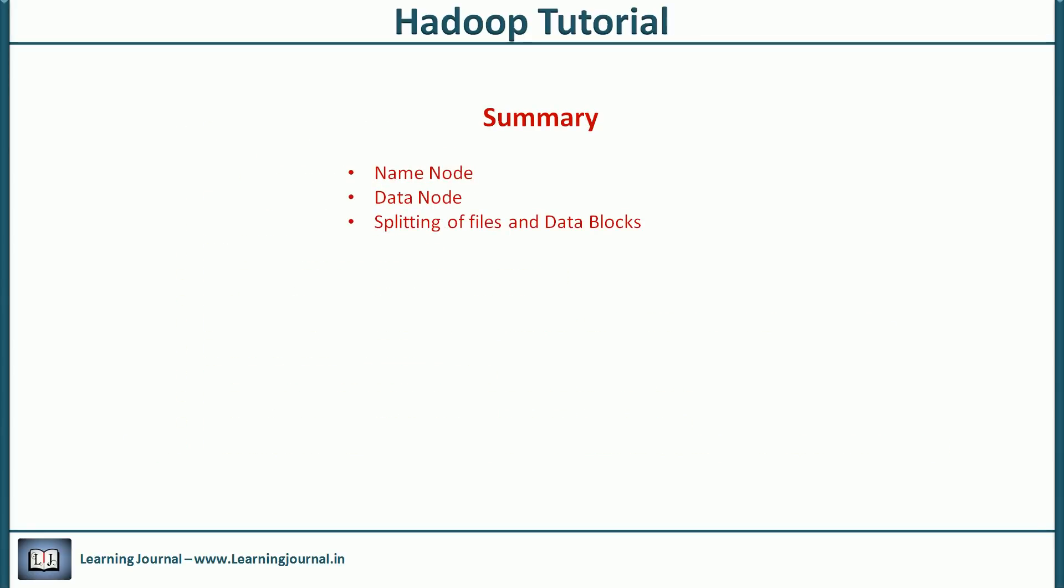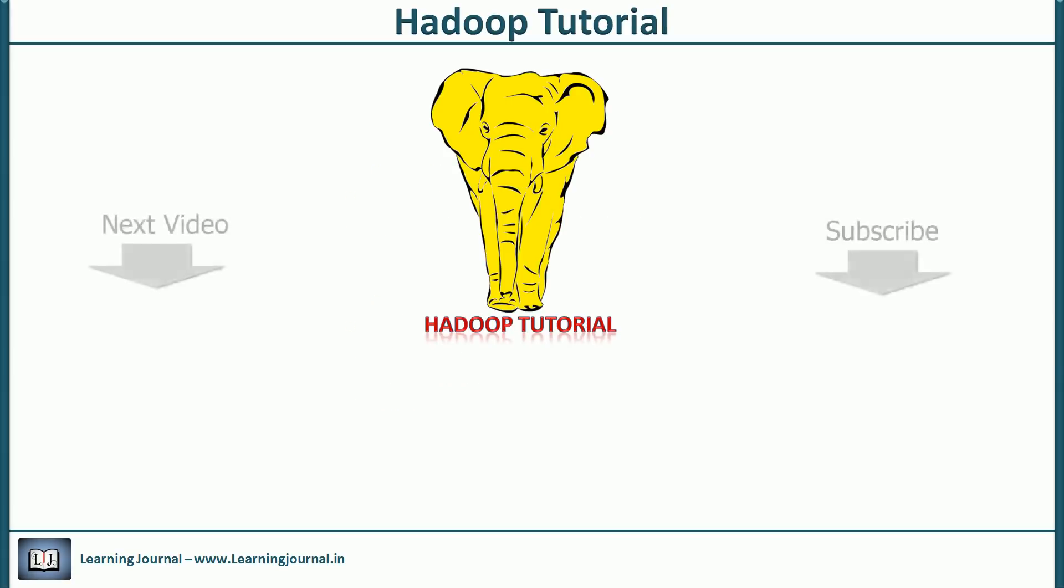So far we talked about following core architecture elements of HDFS. We also talked about heartbeat, block report, block sizes, client-side buffering and FS image. In the next video, I will cover fault tolerance and high availability features of Hadoop. Thank you for watching learning journal. Please like, subscribe and share to support us. Keep learning and keep growing.